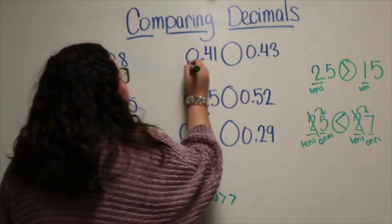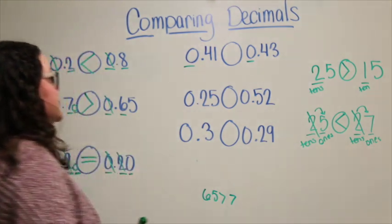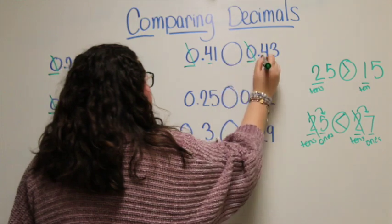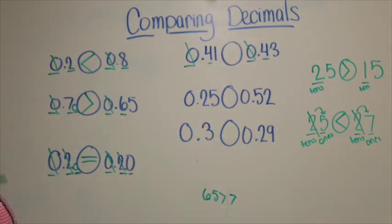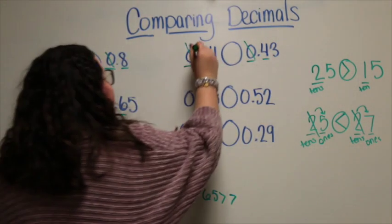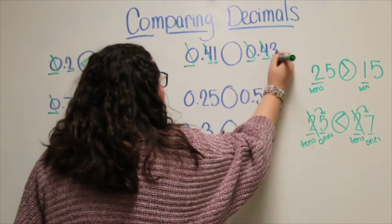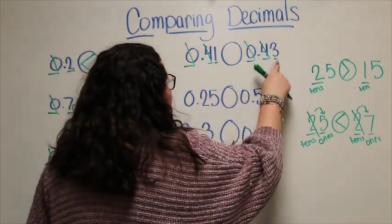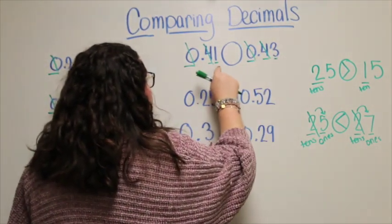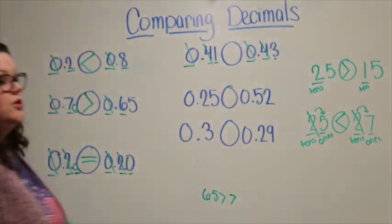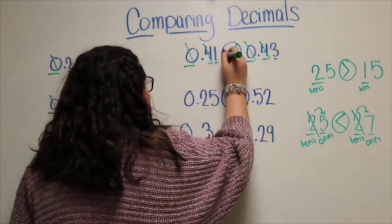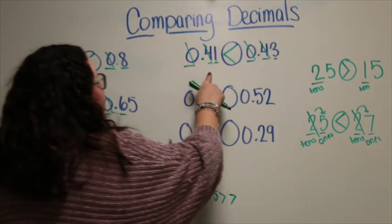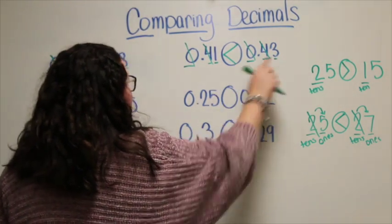My next example: again I start in my greatest place value, the ones place — they are both zero. Go to my tenths place — they are both a four. So I need to go to my hundredths place. Now I see a one and a three: one hundredth and three hundredths. Which one is greater? Three hundredths is greater. So I can say forty-one hundredths is less than forty-three hundredths.